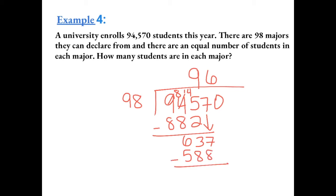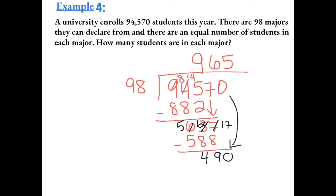So now we're going to carry down the 0. This becomes a 12, and this becomes a 5. So now we have 9 and 4, so we have 49. Now we're going to carry down the 0, so now 98 goes into 490 five times exactly, so we have no remainder. So there are 965 students in each major.